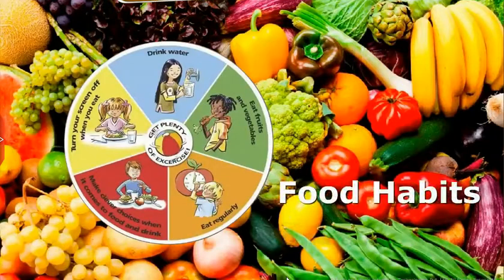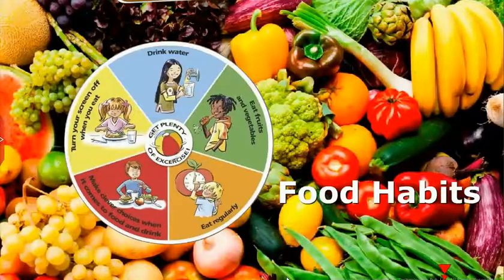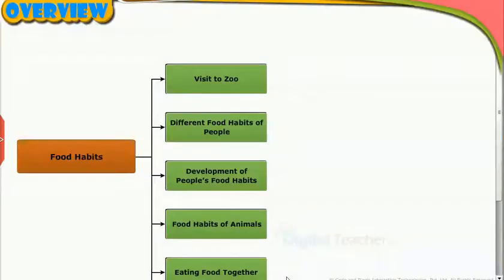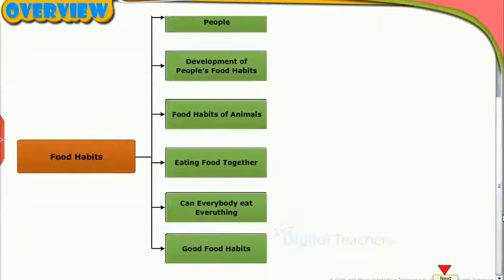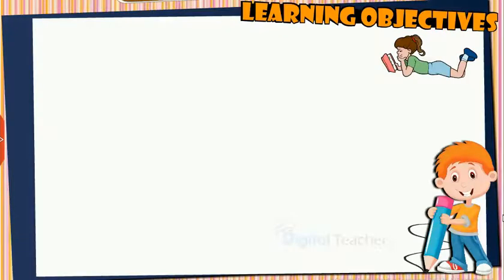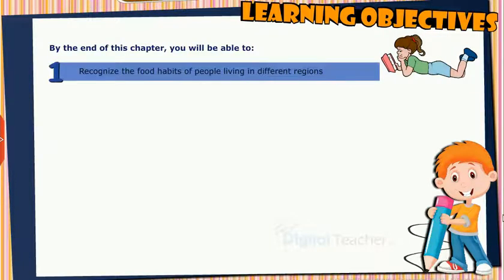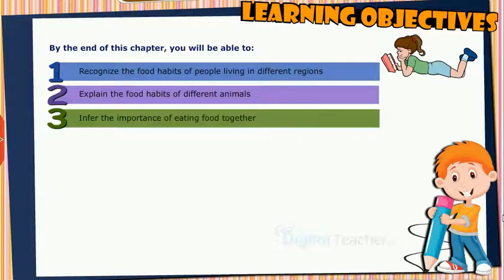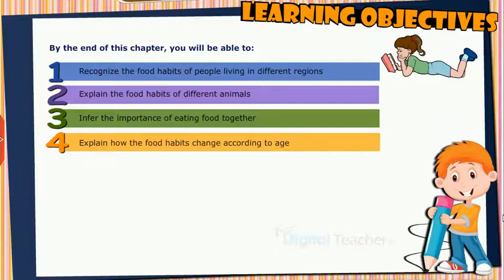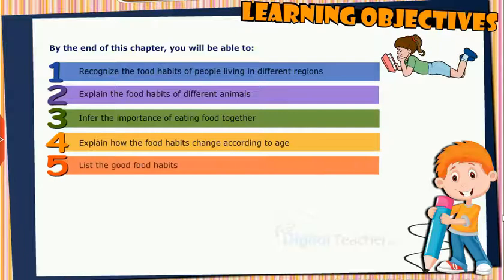Welcome to the chapter Food Habits. This slide presents the overview of the chapter. Learning Objectives: By the end of this chapter, you will be able to recognize the food habits of people living in different regions, explain the food habits of different animals, infer the importance of eating food together, explain how the food habits change according to age, and list the good food habits.